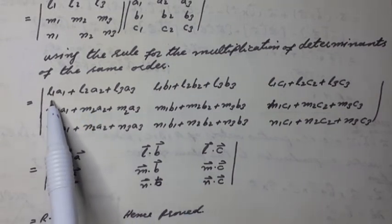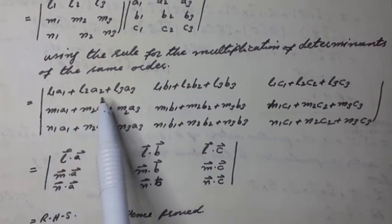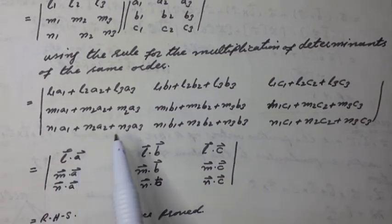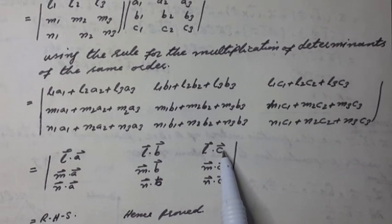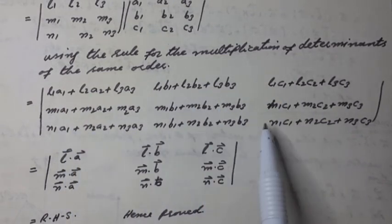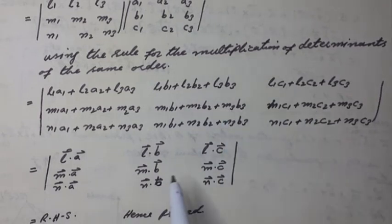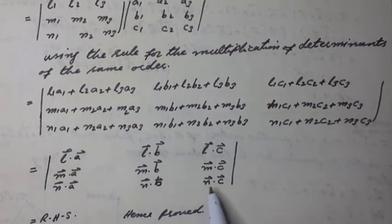This determinant can be written, according to the definition of the dot product of two vectors, as the determinant with first row: L·A, L·B, L·C; second row: M·A, M·B, M·C; third row: N·A, N·B, N·C. This is equal to the right-hand side. Hence the proof.